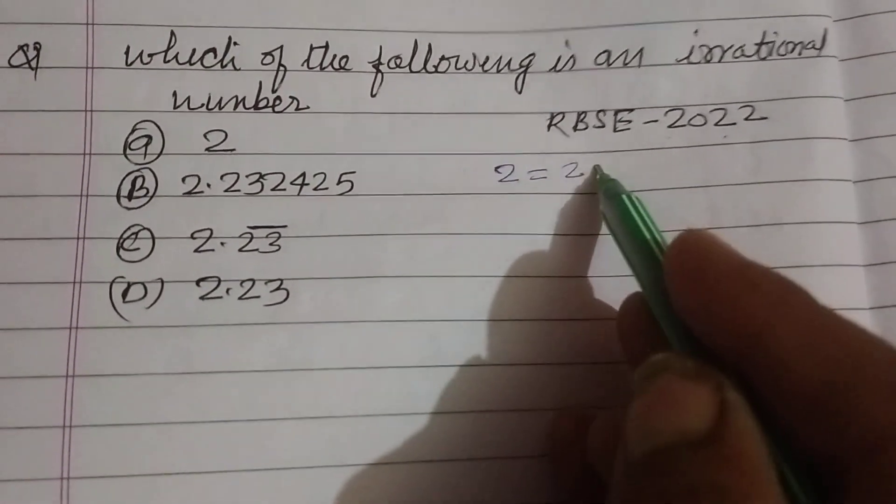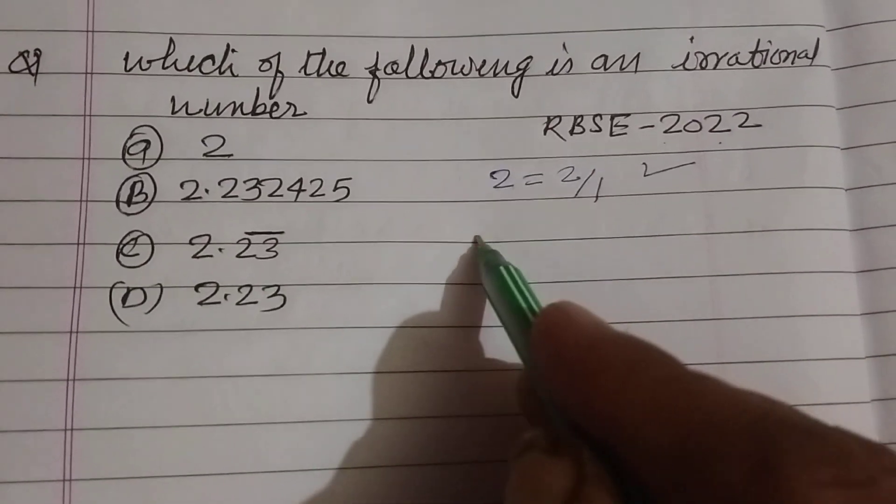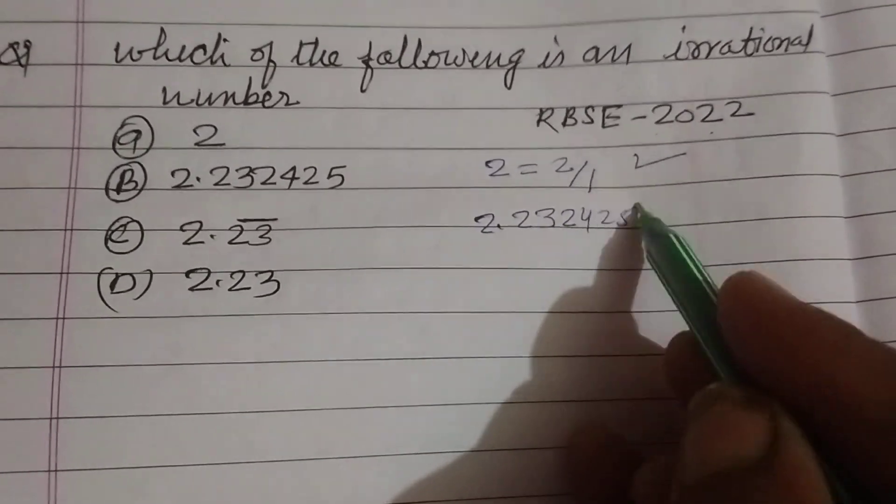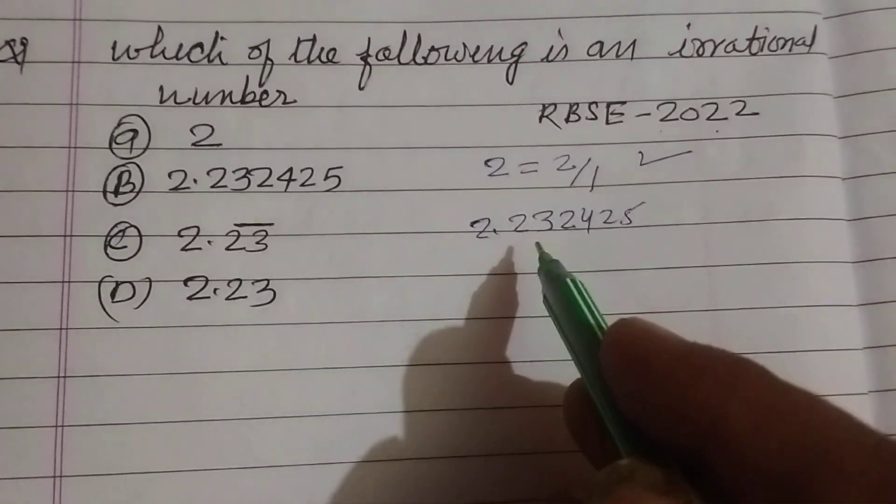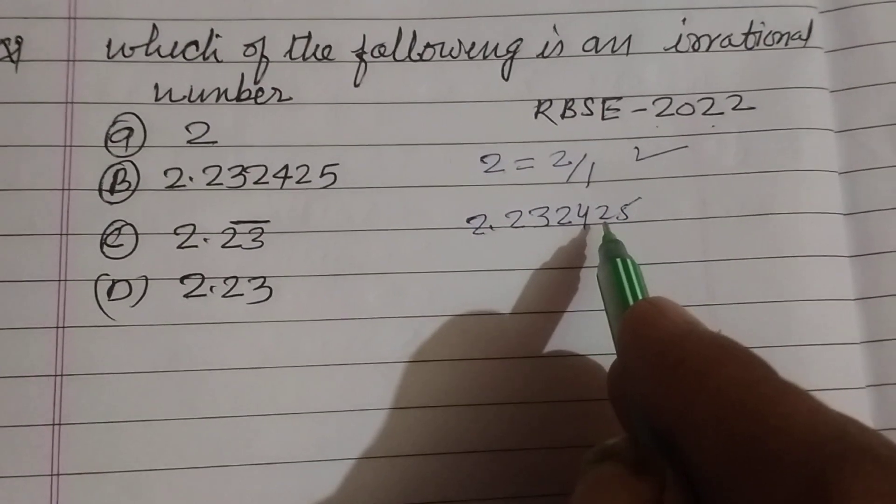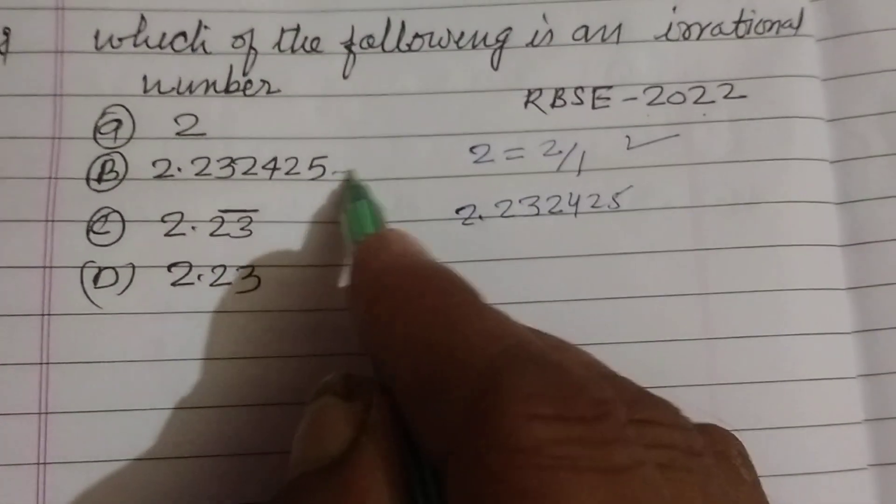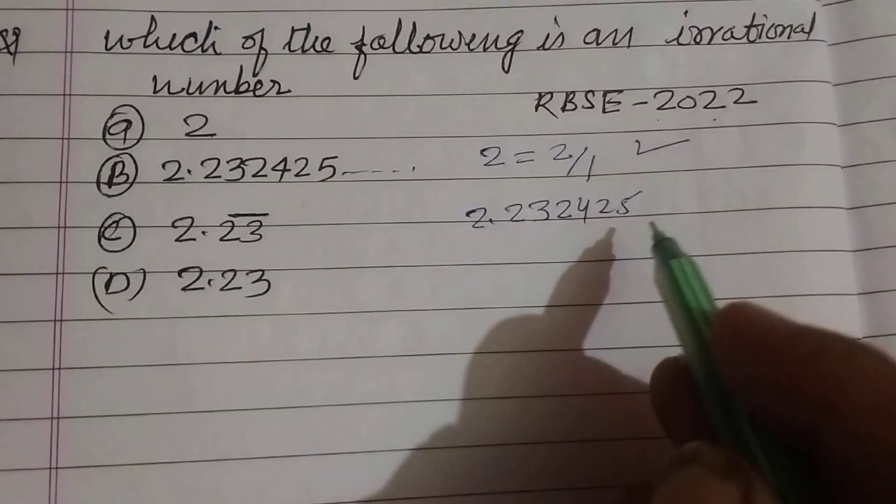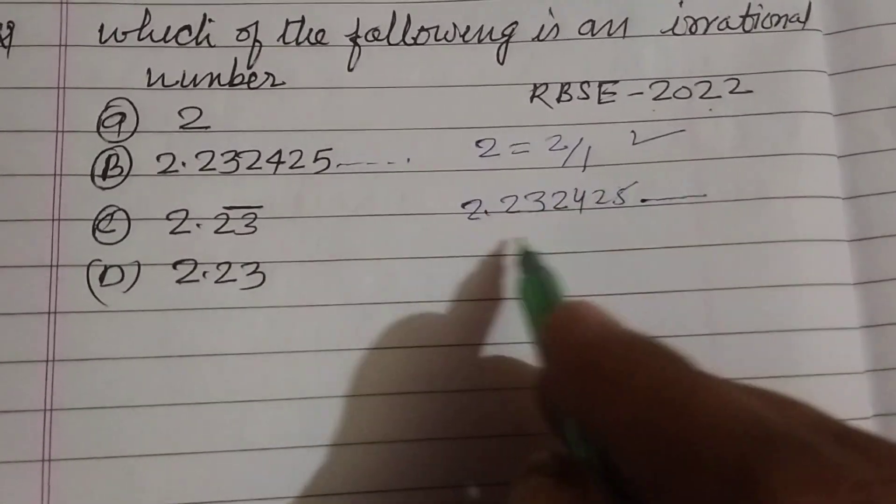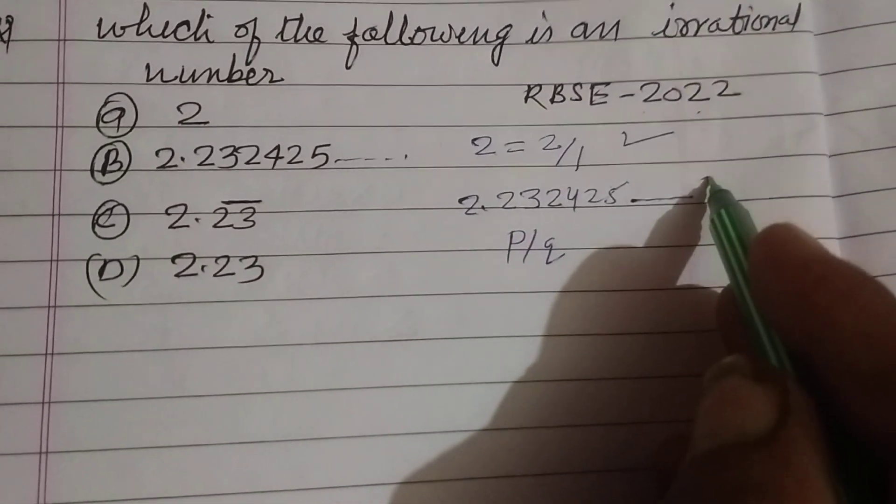So 2 can be written as 2 upon 1, so this is a rational number. 2.232425... This number is not written in form of dot dot dot. This is also dot dot here. So this cannot be written in form of P over Q. Therefore it is an irrational number.